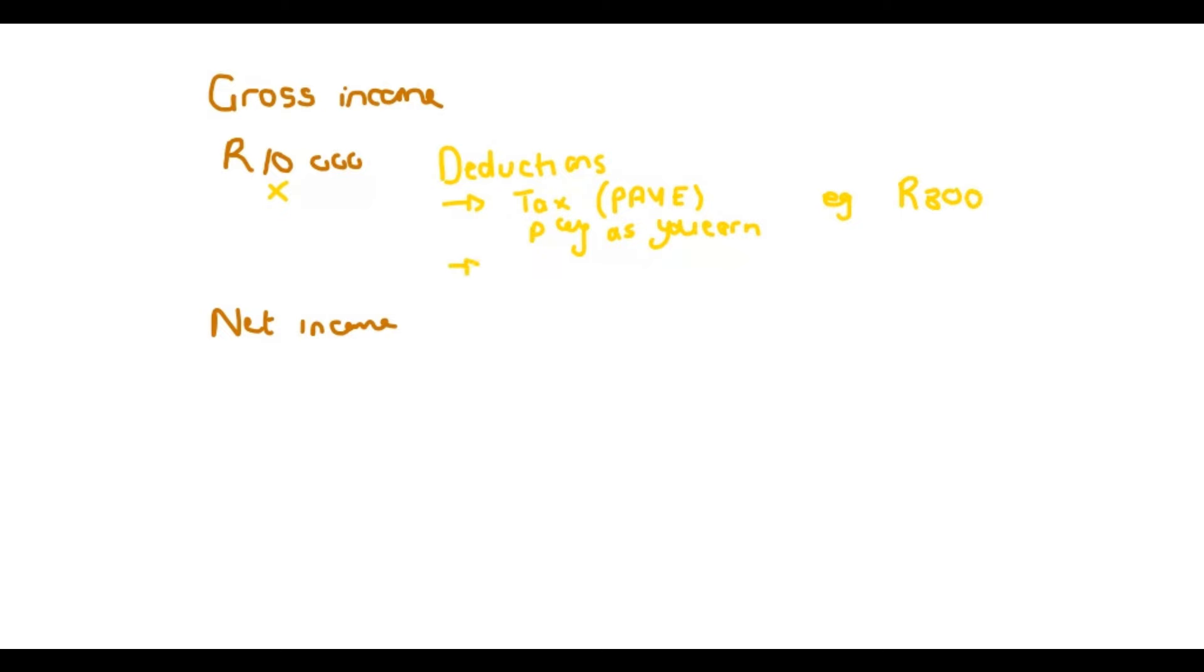And then something like pension. Pension is also a deduction. Maybe his employer is paying his pension. Let's say for this example purpose, this is 100 Rand.